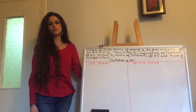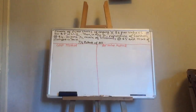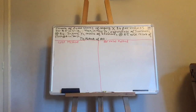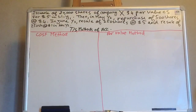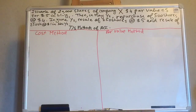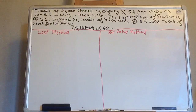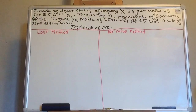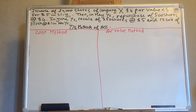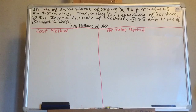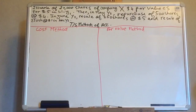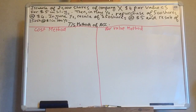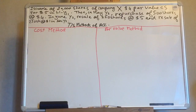A very interesting journal entry in this topic. Let's start our example. We have an issuance of 20,000 shares of Company X, $4 par-value common stock for $5 in January year 1. Then in May year 2, repurchase of 500 shares at $4. In June year 2, resale of 250 shares at $5, and resale of 250 shares at $1 in November year 2. You have to write down this example, and the best way to explain the difference between the cost method and the par-value method is by using an example.